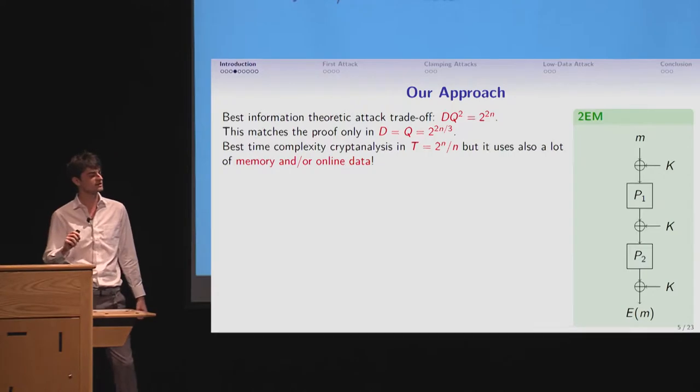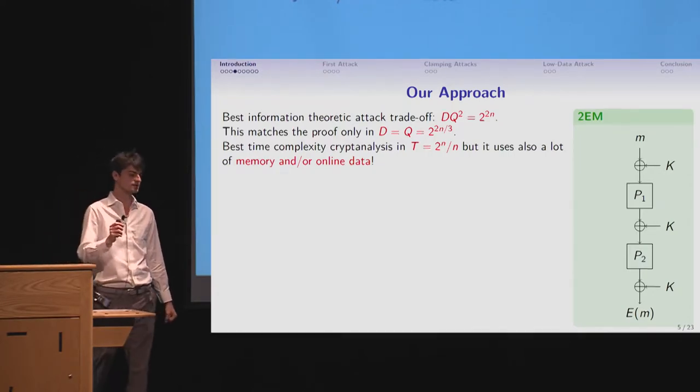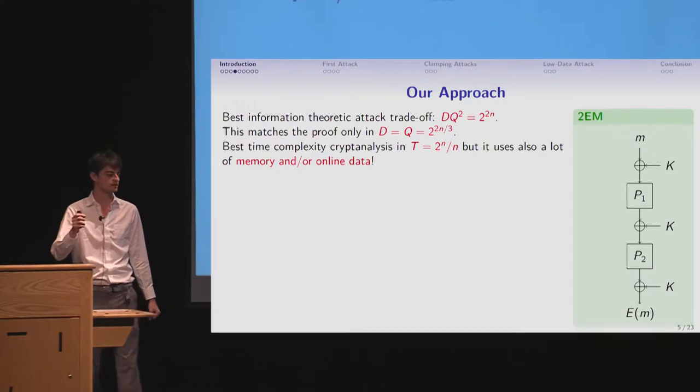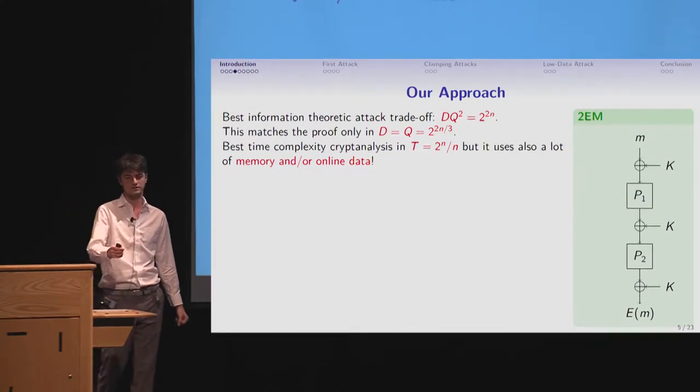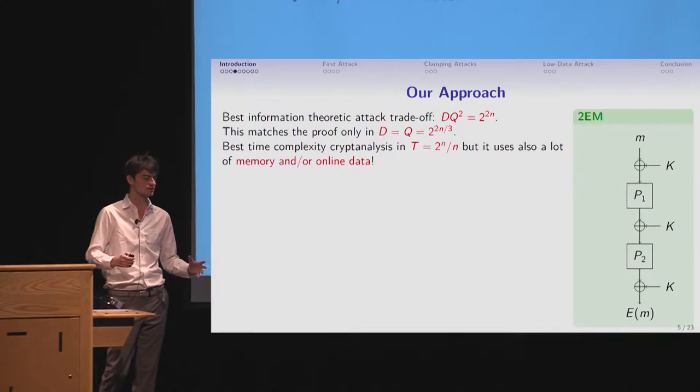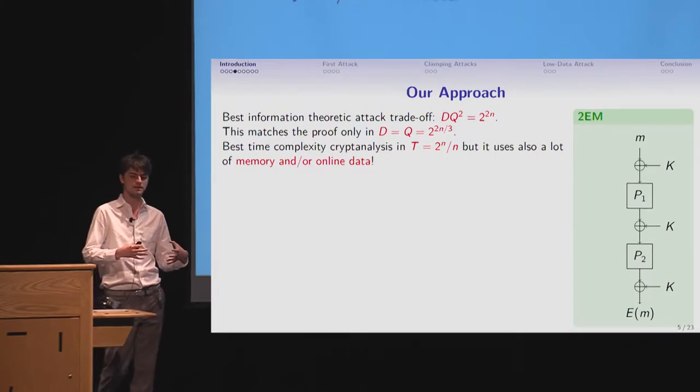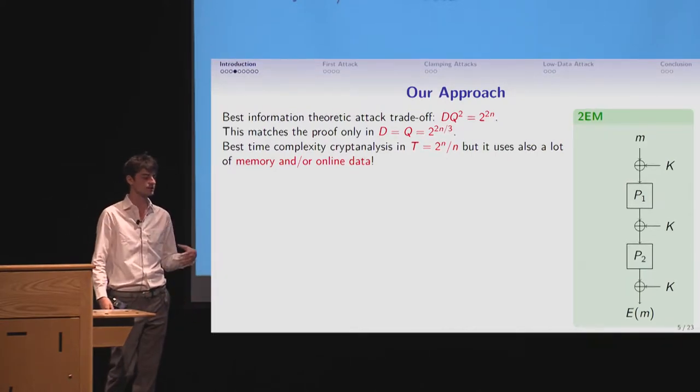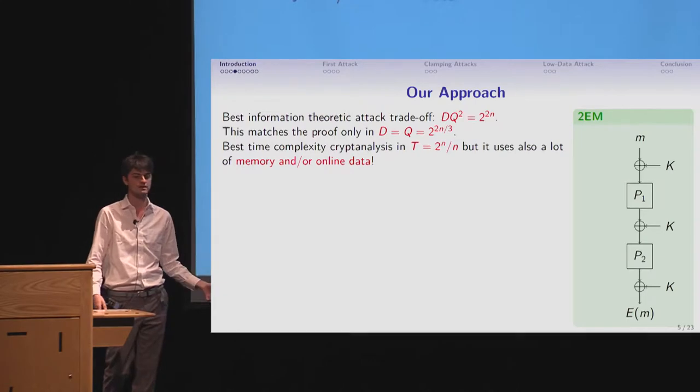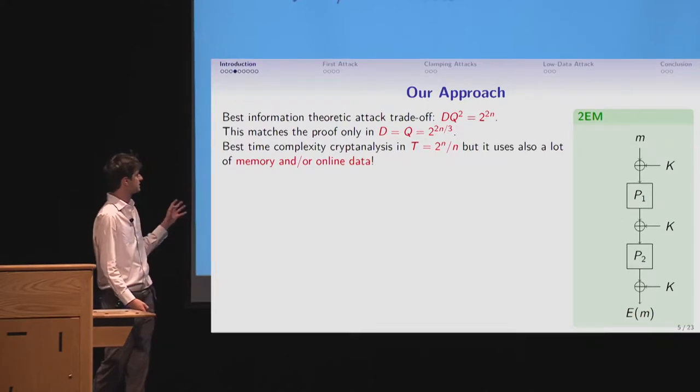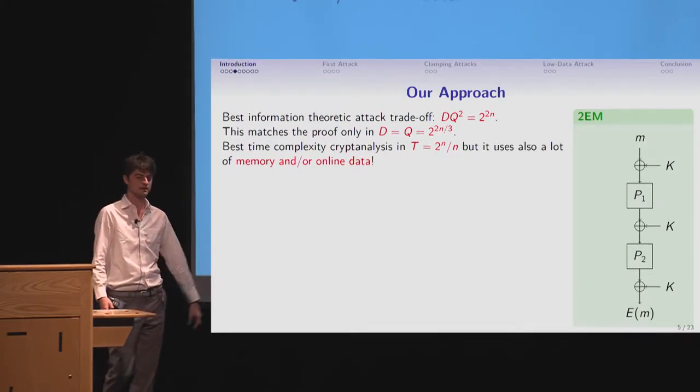However, when you look at information theoretic attack, you have one with the trade-off, D times Q squared, equal to 2 to the 2n. So you could have D and Q being 2 to the 2n over 3, and have an information theoretic attack. You have enough information to recover the key. However, the best time complexity, the issue is not the data, but the processing time of this data. And we don't have anything better than 2 to the n over n. And it's even worse than that, because often, they use either a lot of memory, that much memory, or online data.